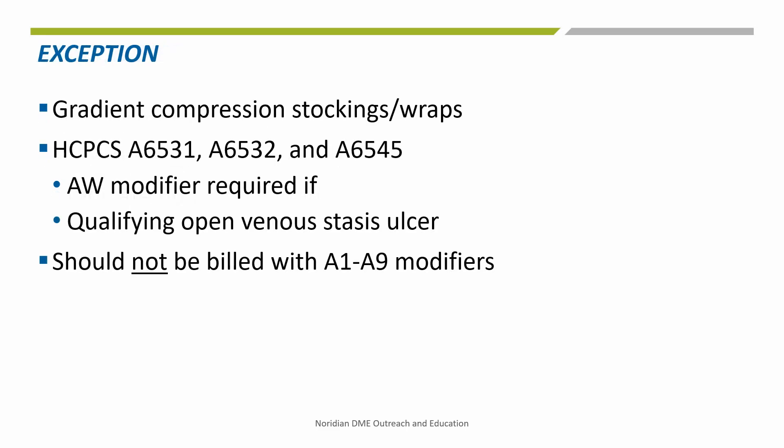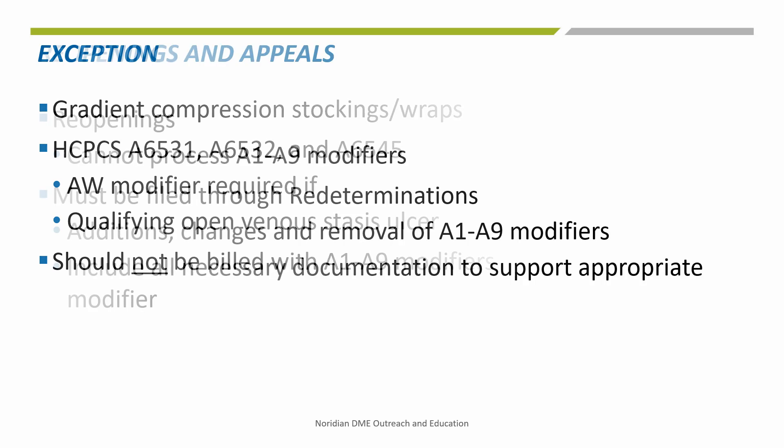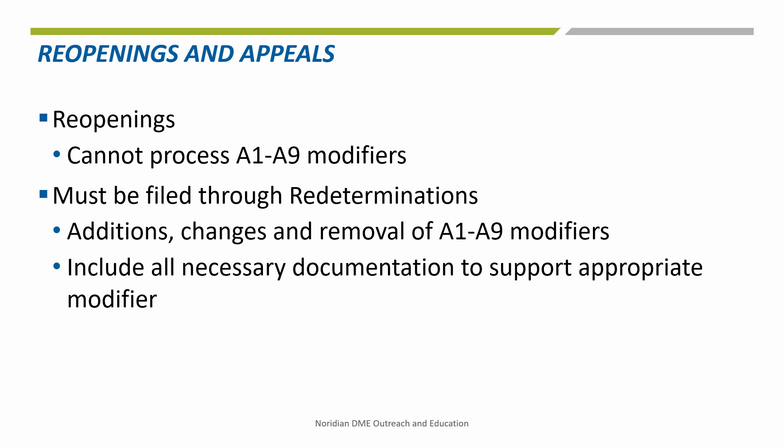There are a couple of exceptions to the rule when billing for surgical dressings with regard to the A1 through A9 modifiers. The first is for gradient compression stocking wraps, specifically HCPCS codes A6531, A6532, and A6545. These codes should not be billed with the A1 through A9 modifiers when used for an open venous stasis ulcer; the AW modifier should be appended instead. Additionally, be aware that the A1 through A9 modifiers cannot be added, changed, or removed during the reopening process. These requests are too complex and must go through redeterminations, because the actual codes require additional documentation that cannot be assessed at the reopening level.